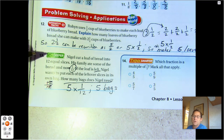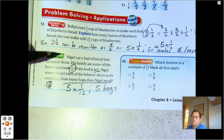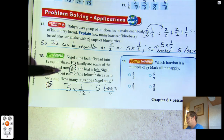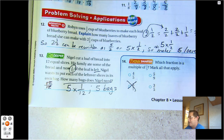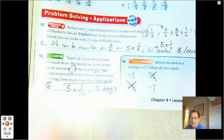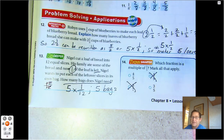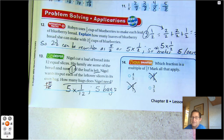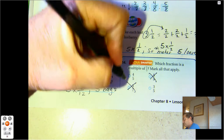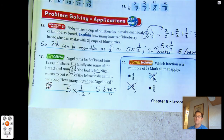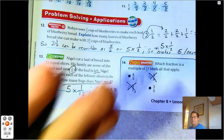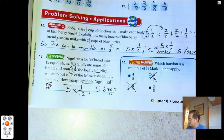Number fourteen: which fraction is a multiple of one-fifth? The denominator has to be five in order for it to be a multiple of one-fifth. To be a multiple of one-fifth, the denominator must be five. So four-fifths would be, and so would three-fifths. One-fifth, two-fifths, three-fifths, four-fifths, five-fifths, six-fifths, and onward.